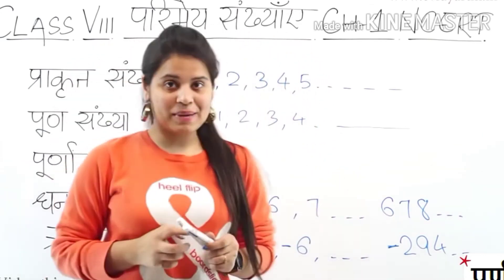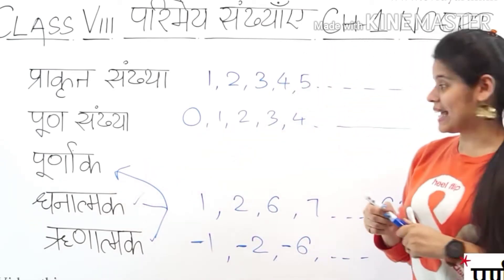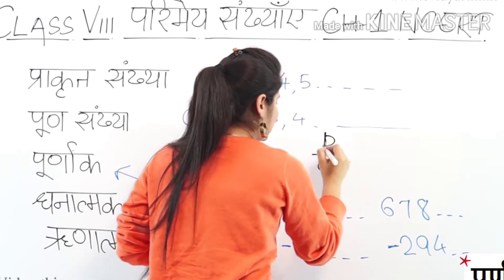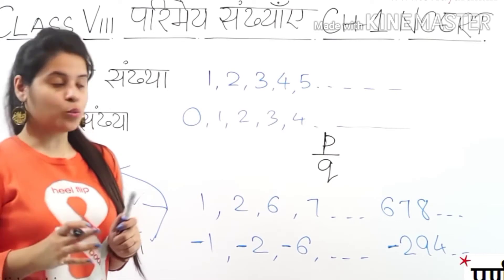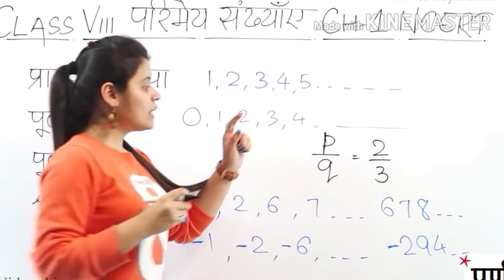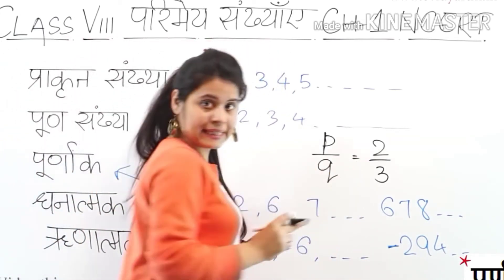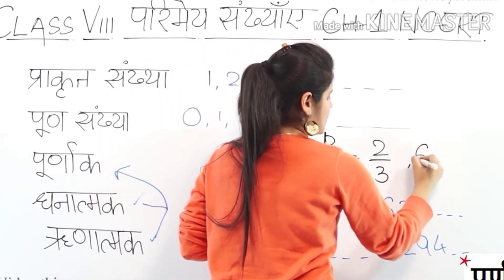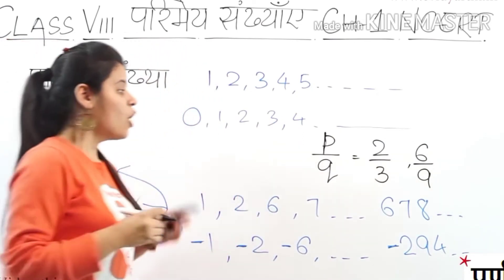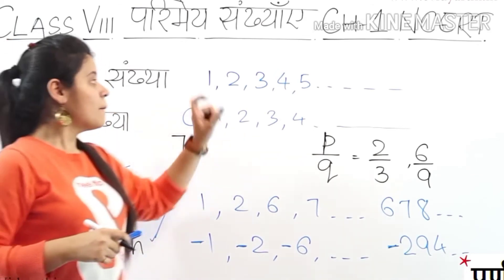Now we are doing Parime Sankhya — Rational Numbers. Parime Sankhya is a number that can be written in the form P upon Q, where Q is not zero. For example, 2 divided by 3 is a Parime Sankhya because Q is not zero. Similarly, 6 over 9 is also a Parime Sankhya. And if we have just the number 7, is 7 a Parime Sankhya?